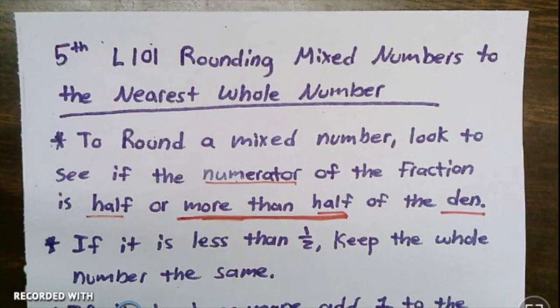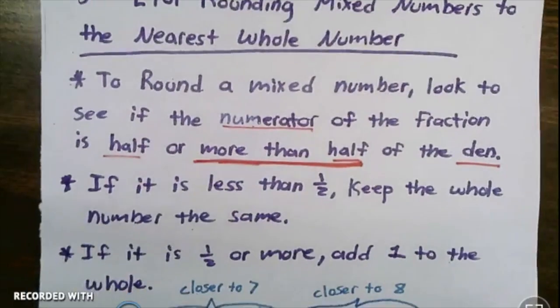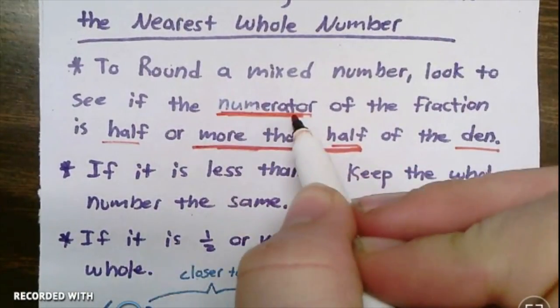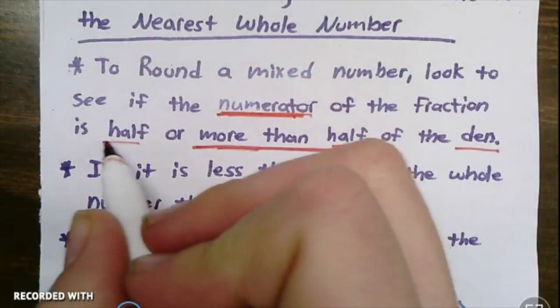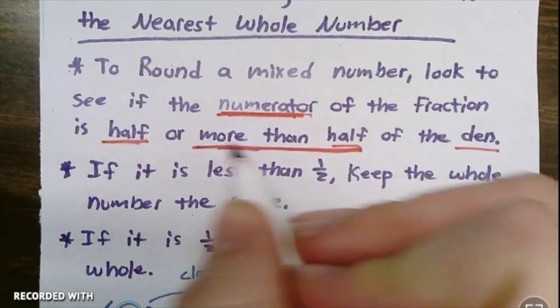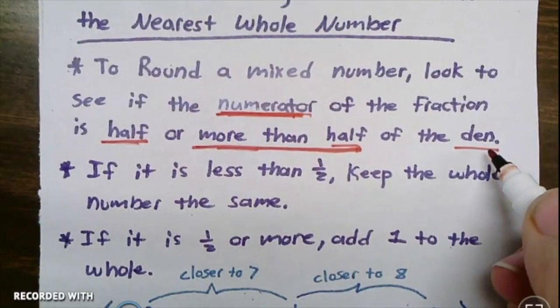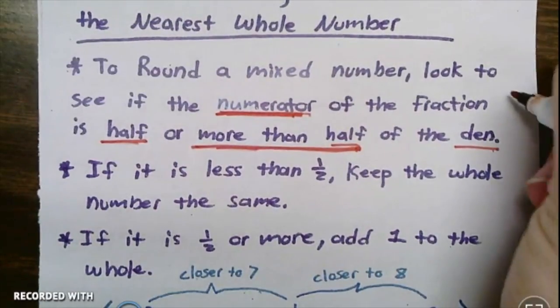Hello fifth graders and welcome to lesson 101 on rounding mixed numbers to the nearest whole number. To round a mixed number, you've got to look to see if the numerator, which is the top number of the fraction, is half or more than half of the denominator of that fraction.